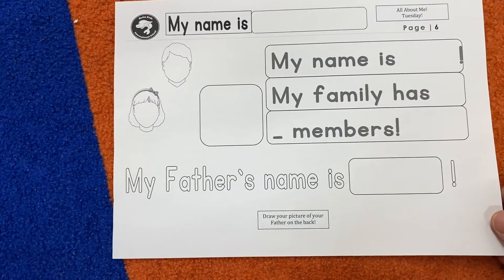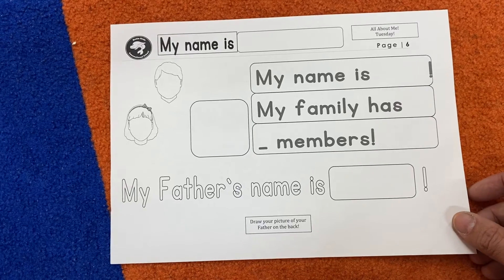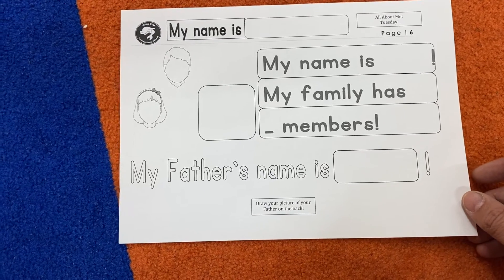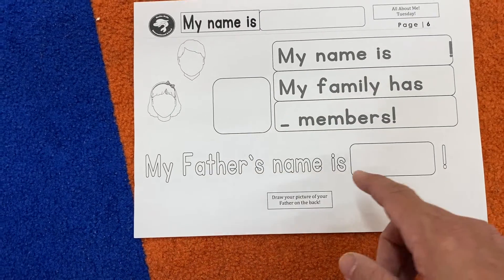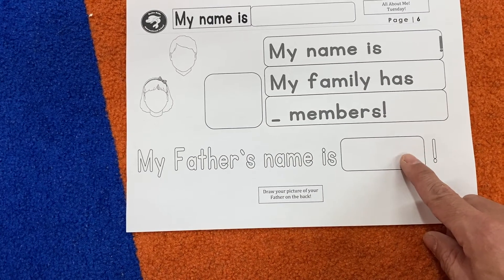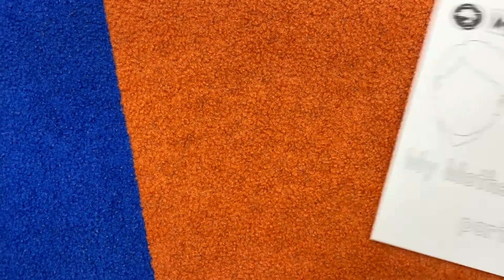It's harder but not so hard — you guys can do it! Here's number six, one more time: my name is... and then my family has how many members? And tricky — my father's name... what is your father's name? On the back, draw a picture of your father.